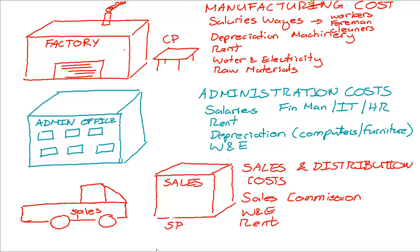That's a brief summary of the different costs related to the different departments. To emphasize: the reason it's important to split costs between the three departments is because the costs that go into the factory are what eventually end up in the finished product. We need to know the full cost price of our finished product before we can determine an accurate selling price. That's why it's very important to identify which costs relate to the factory — manufacturing costs — and which ones don't, classifying them as either admin costs or selling and distribution costs.